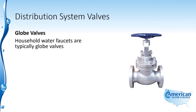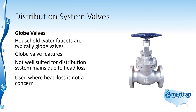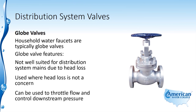Globe valves are a different type of valve, and household faucets are typically globe valves. Globe valves are not well suited for distribution system mains because of the high head loss within the globe valve. They are used where head loss is not a concern, but they can be used to throttle flow and control downstream pressure in high pressure, high flow situations.